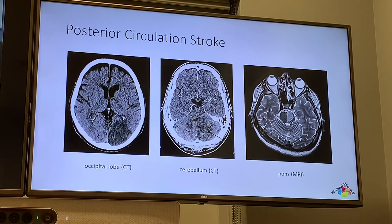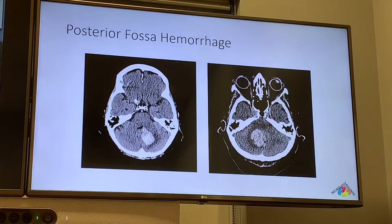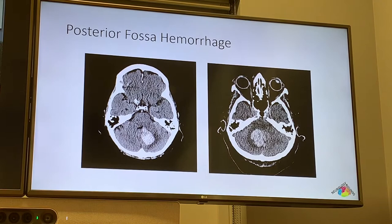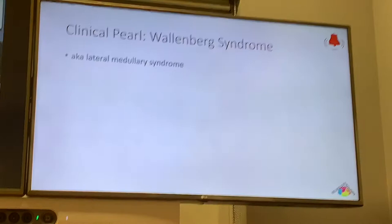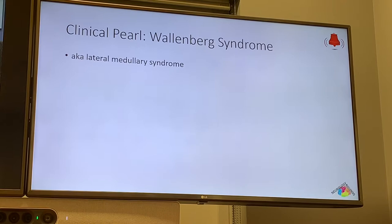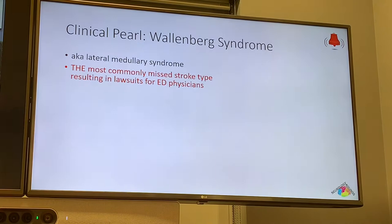Hemorrhages on CT are usually hard to miss since blood appears bright. A critical clinical pearl: Wallenberg syndrome — a lateral medullary infarct — is the most commonly missed stroke type resulting in lawsuits for emergency physicians. Despite being rare, it reliably gets missed because it can present with nothing but vertigo. However, it also knocks out the spinothalamic tract and nucleus ambiguus, producing many subtle additional findings.